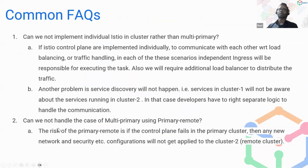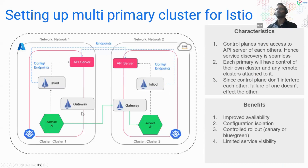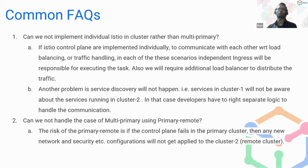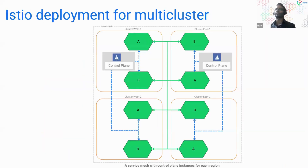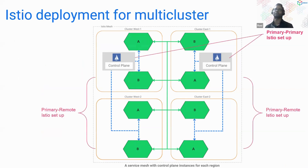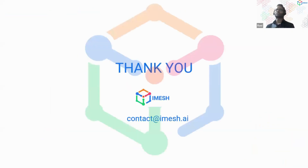Another common question: can primary-remote handle multi-primary use cases? In primary-remote, if the single control plane goes down it can affect the remote cluster. Multi-primary avoids this by having independent control planes. However, if you set up multiple replicas, you can mix and match — if one goes down, the other can still handle requests. For any questions, feel free to contact us at contact@imis.ai. Thank you.